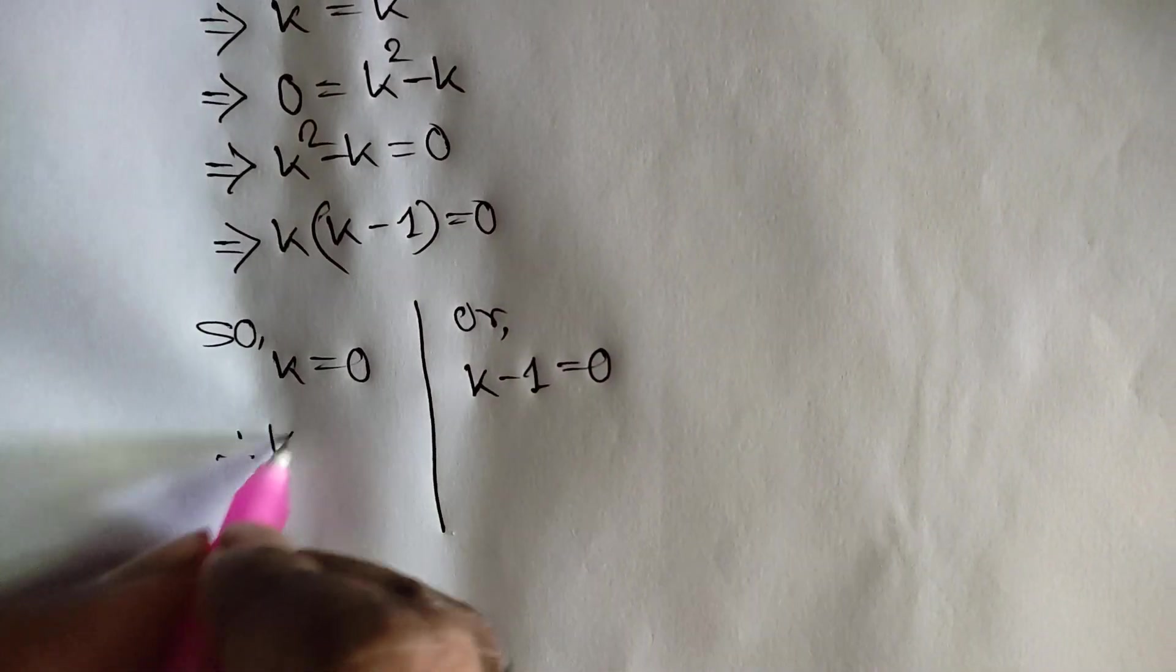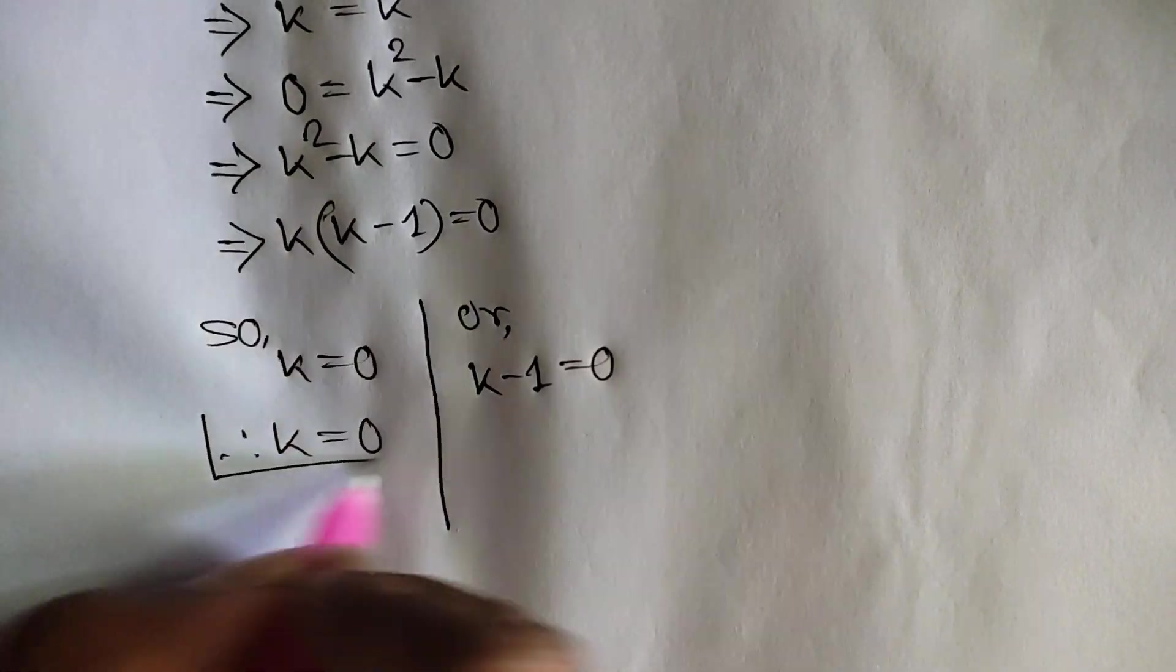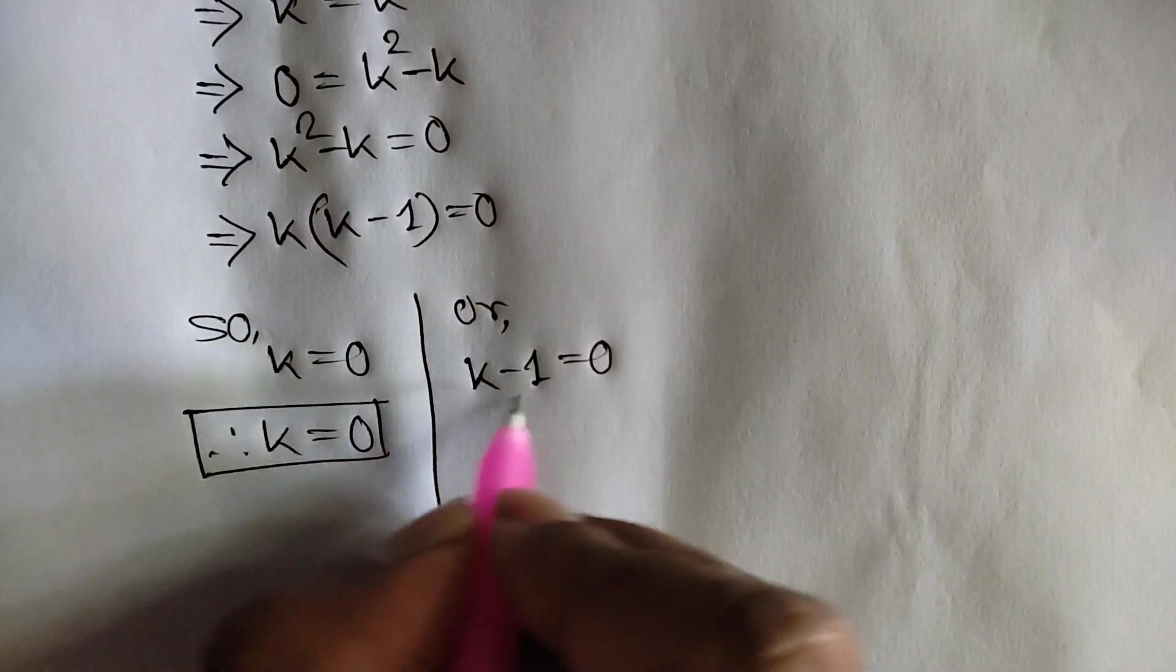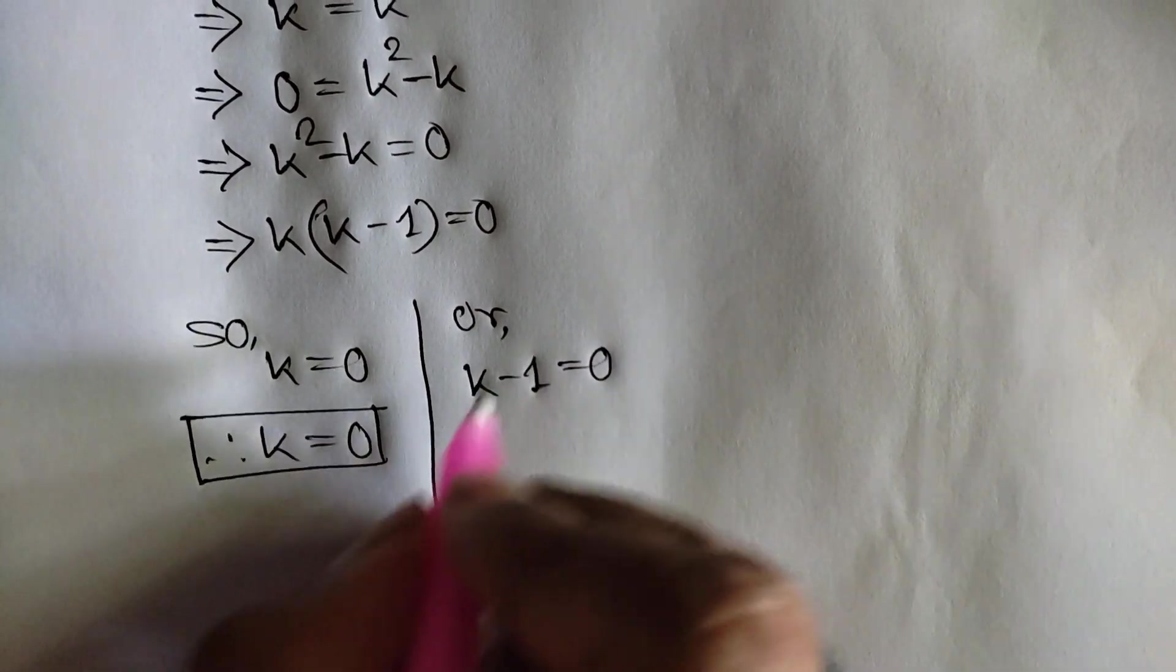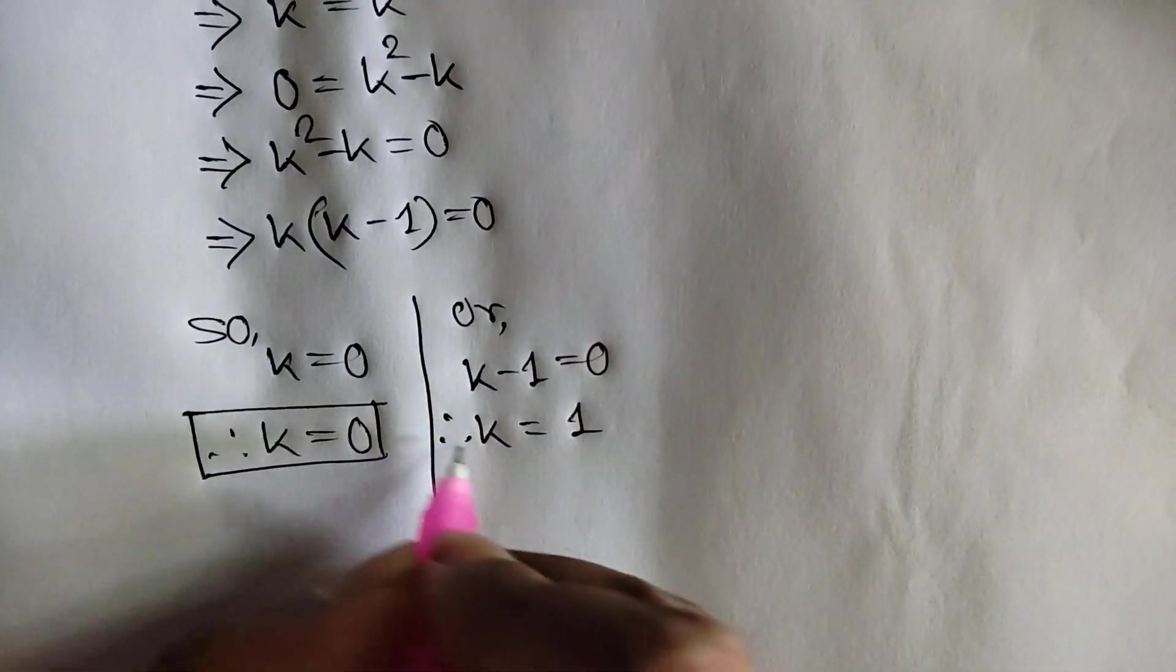So the value of k is equal to 0, and taking the negative one to the right side, we will get k is equal to 1.